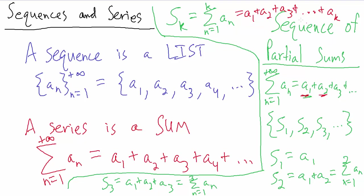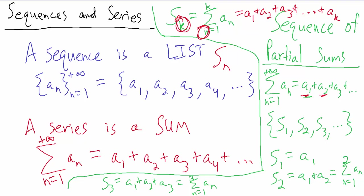You might wonder why we don't write S_n instead of S_k. We can't use n because n is already being used as the summation index. The index n inside the sigma notation and the subscript k on S represent two different things, so we can't use the same variable for both.